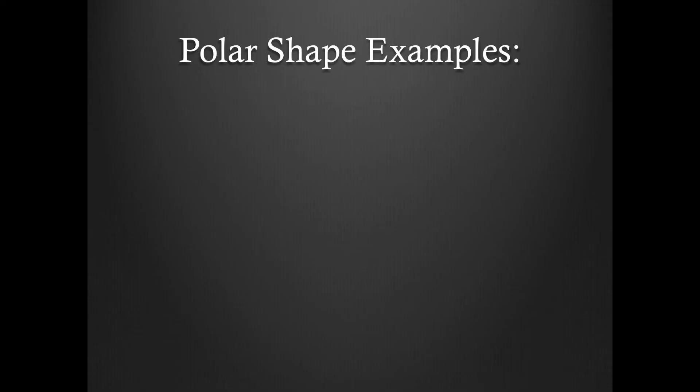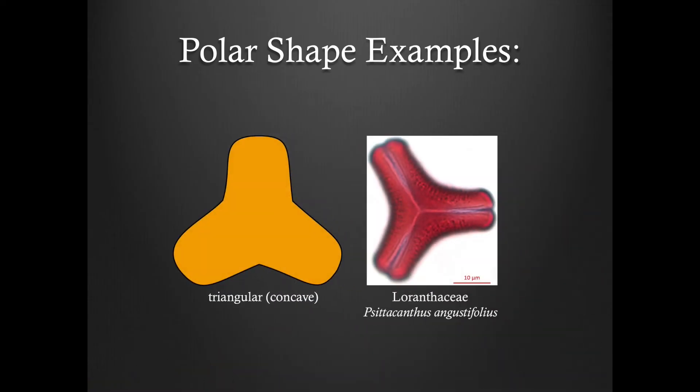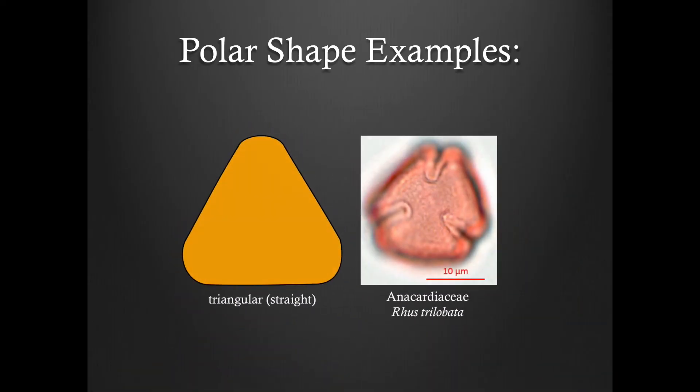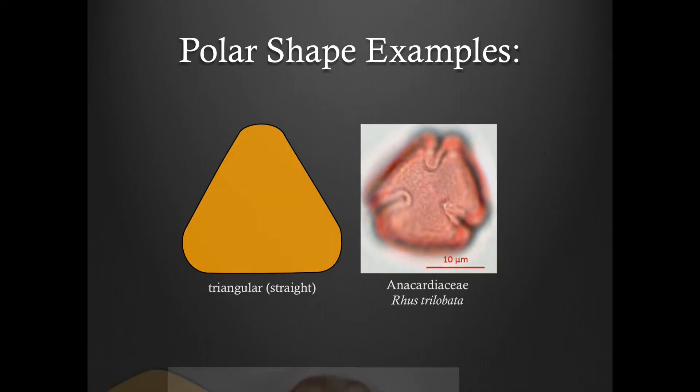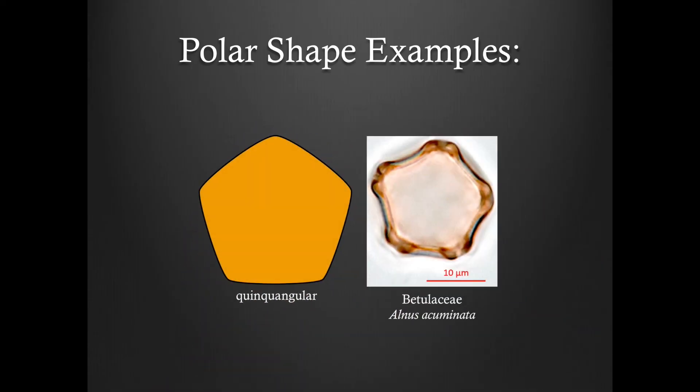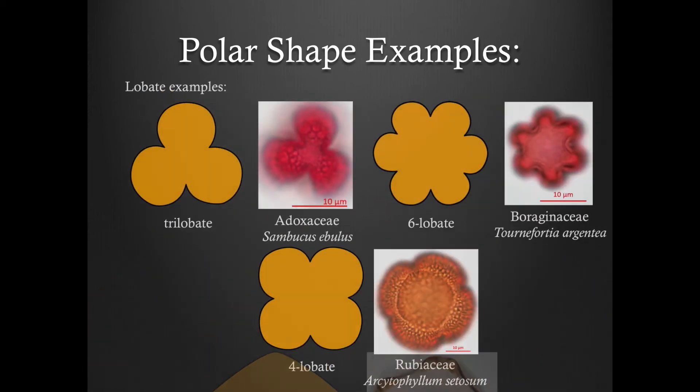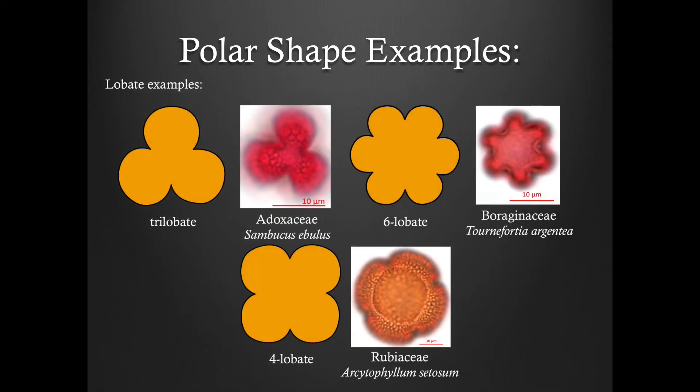Now here are some examples. Here is a triangular concave grain. Here is a triangular straight grain. Here we have a quinquangular grain. And here are a few examples of loebate grains. As you can see, the number of lobes present may vary.